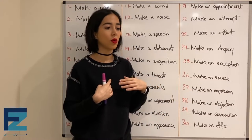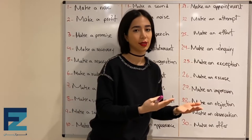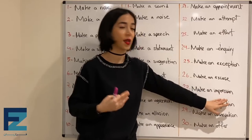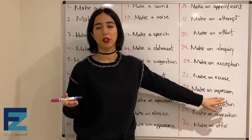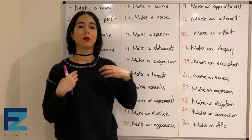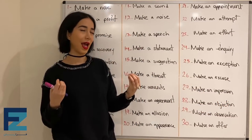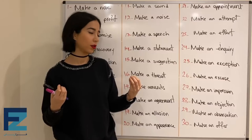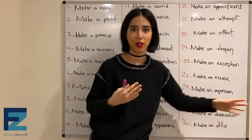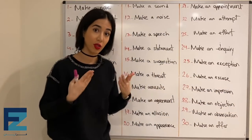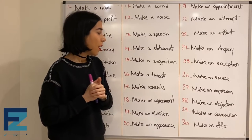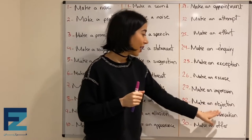Number twenty-seven: make an impression. Make an impression means to impress someone — تحت تأثیر قرار دادن. To make an impression on someone یعنی یک کسی رو تحت تأثیر گذاشتن.